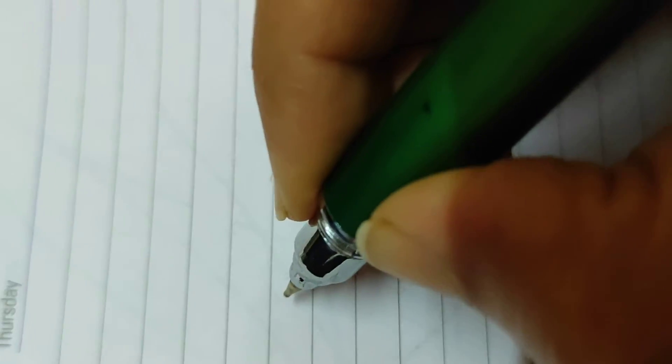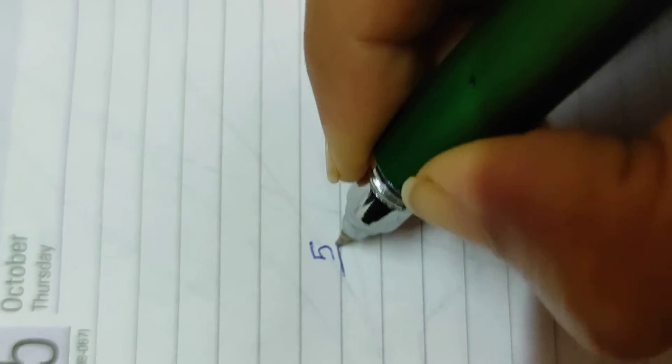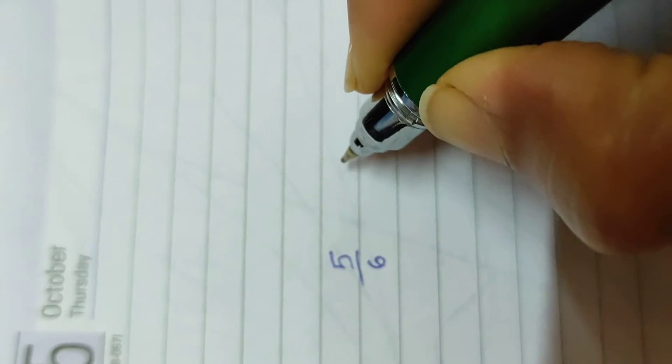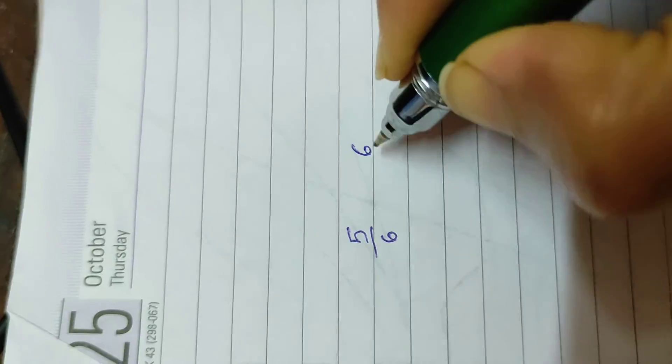Here's a video to explain fraction comparison using the method I taught you in the morning. So let's say we have a number 5 by 6 and we want to compare it with 6 by 7.